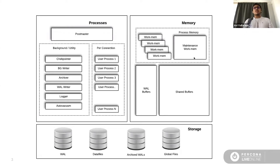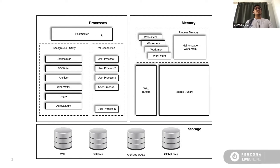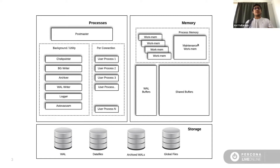Before we go ahead with the parameters, I just want to make sure you see the architecture diagram of Postgres. On the left side you see the background processes. Postmaster is the parent process that serves as a listener — in Oracle terms it's a superuser process that forks a backend process for each new connection. There are several other background processes always running to take care of many activities: checkpointer, background writer, archiver, WAL writer, logger, and auto vacuum. In memory we also have work mem, maintenance work mem, shared buffers, and WAL buffers. We're going to talk about most of these today.